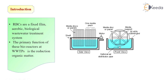As you can see in this picture, this is the schematic diagram of rotating biological contactors. The rectangular tank contains sewage or wastewater. There is a circular rotating disc made up of plastic material which rotates around a circular shaft. The disc is continuously rotating, with approximately 35 to 40 percent of the disc immersed in the sewage and the remaining part open to the atmosphere.